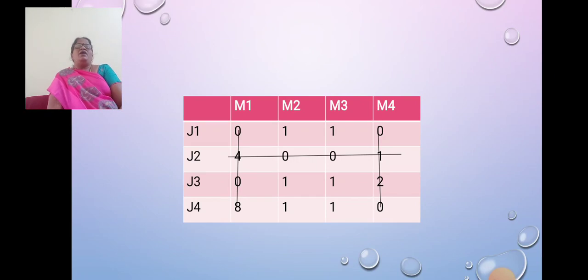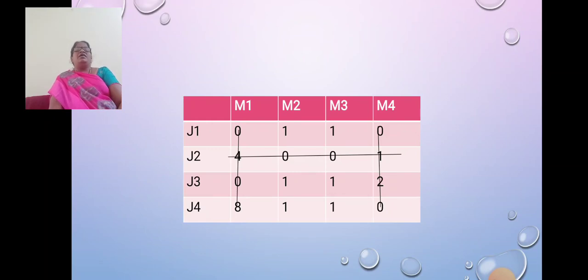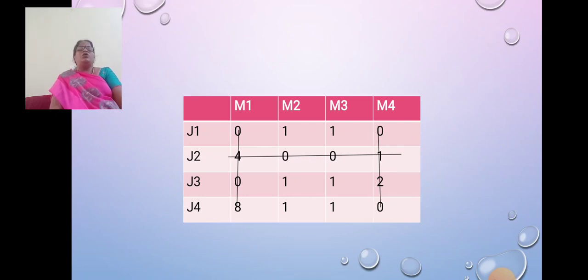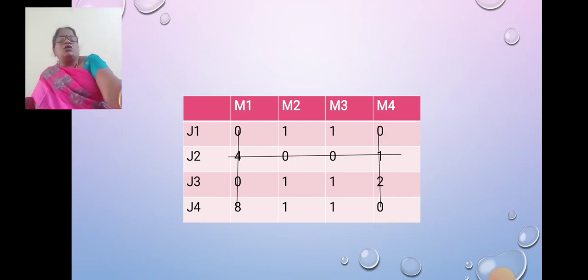Now we have a remaining part; 1 is the result. After strikeout, the minimum value is 1. We subtract 1 from the rest of the numbers, and at intersection points we add the number. At intersection place 4, we add 1 to get 5. At M4 and J2 intersection, we add 1 to get 2. For the remaining places without strikeout: 1 minus 1 is 0, 1 minus 1 is 0, in J3 1 minus 1 is 0, in M3 1 minus 1 is 0, in J4 1 minus 1 is 0, in M3 1 minus 1 is 0.